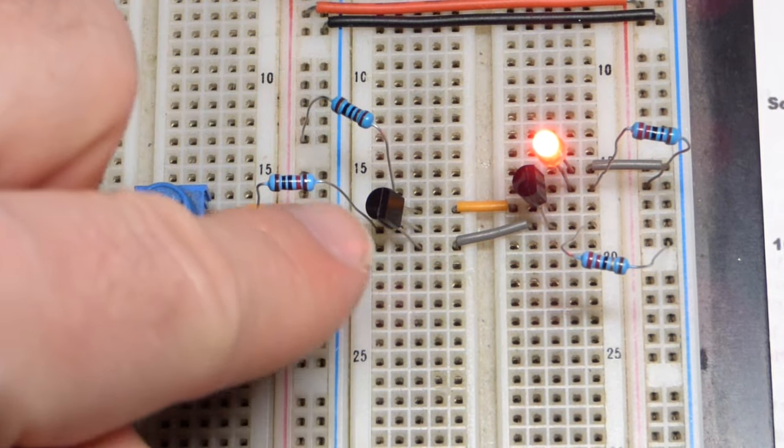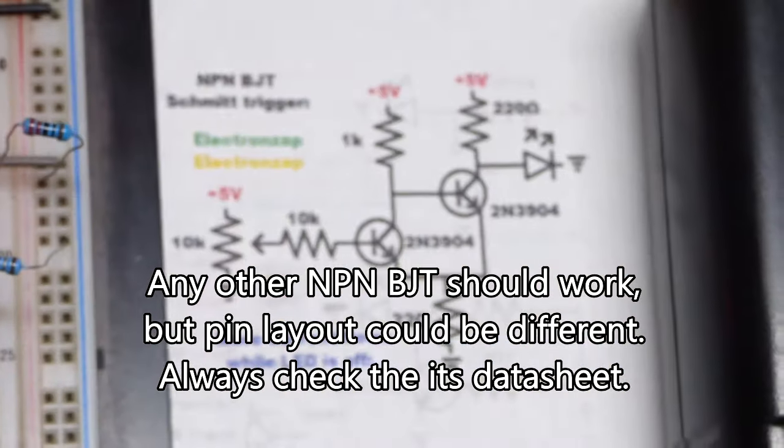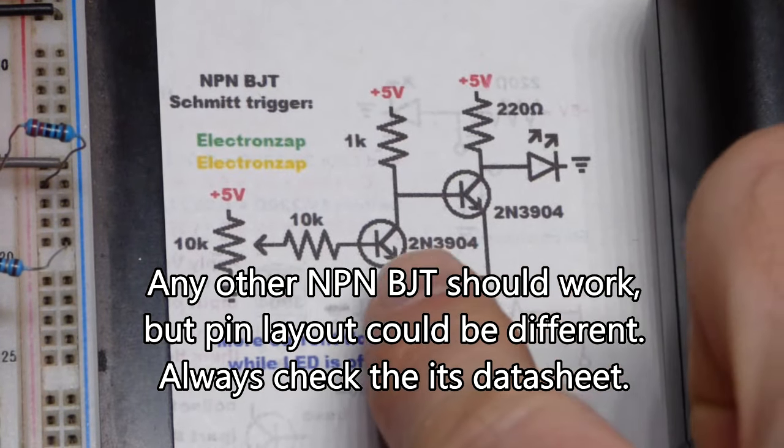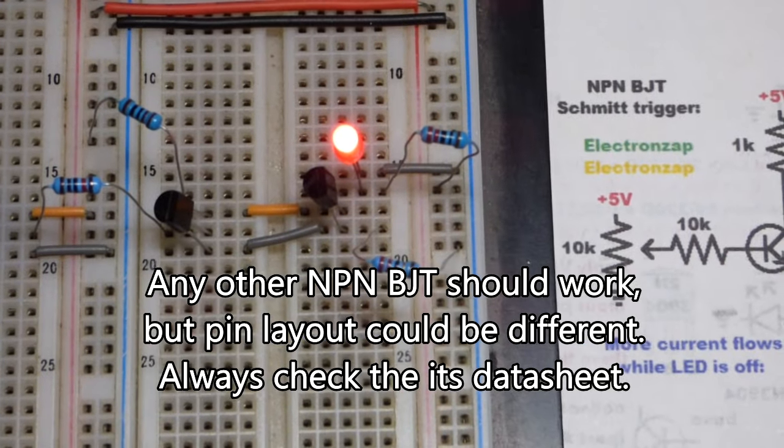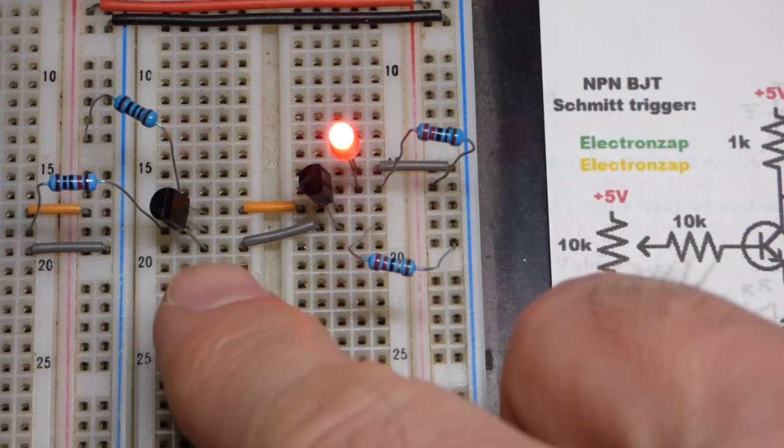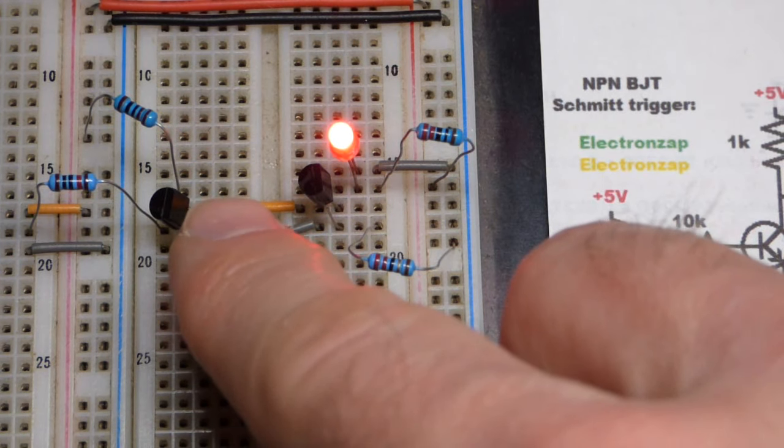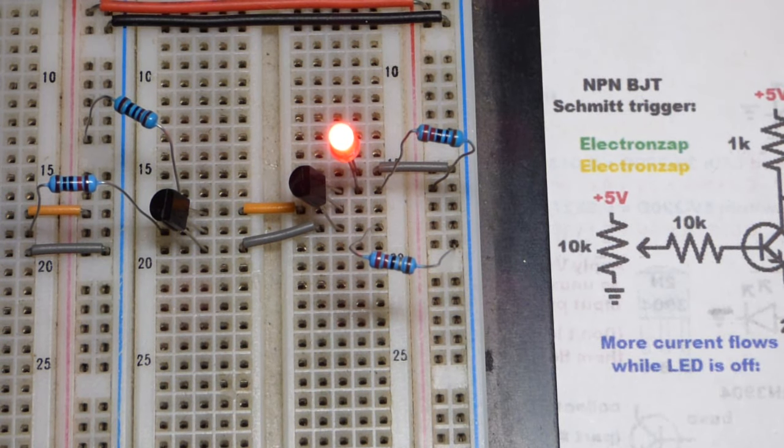The NPN bipolar junction transistor, it's a 2N3904. As I said in the schematic right there. So I have the flat side to the right. So if you're looking at the front, the left would be the emitter. When it's facing to the right, the bottom is the emitter. Middle is the base and the top is the collector. Same pin layout for that one. They're both 2N3904.